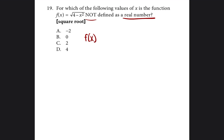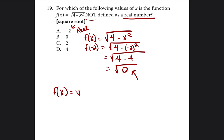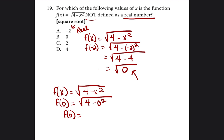Let's get started. f(x) = √(4 − x²). For answer A, f(−2) = √(4 − (−2)²) = √(4 − 4) = √0 = 0. Not negative, so A is real. For answer B, f(0) = √(4 − 0²) = √(4 − 0) = √4 = 2. Also positive, so B is also real.